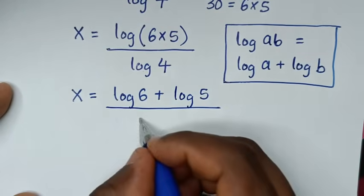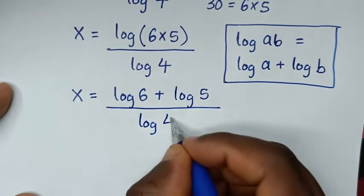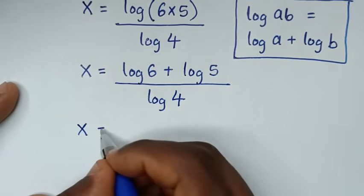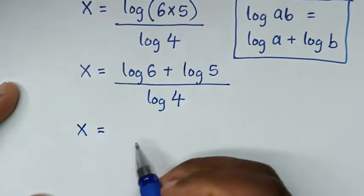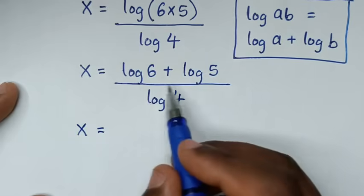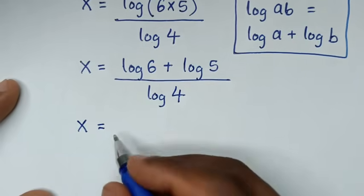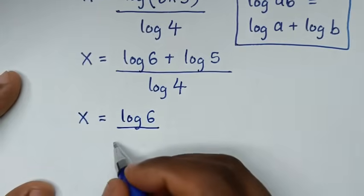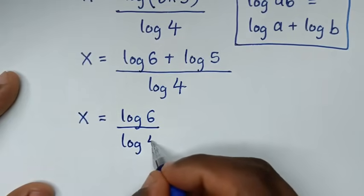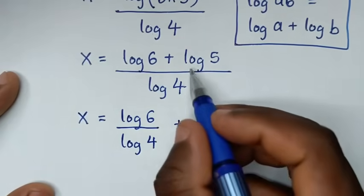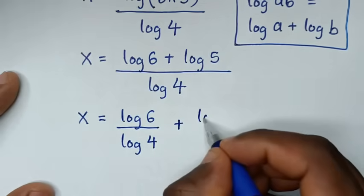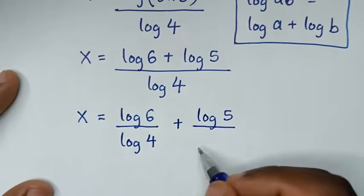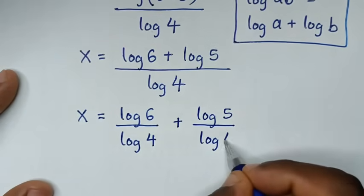Then in the next step, x is equal to — we divide by log of 4 in each part — so it will be log of 6 over log of 4 plus log of 5 over log of 4.